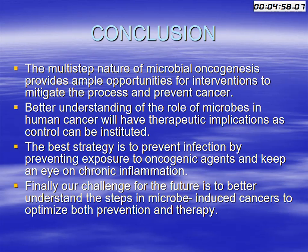In conclusion, the multistep nature of microbial oncogenesis provides ample opportunities for interventions to mitigate the process and prevent cancer. Better understanding of the role of microbes in human cancer will have therapeutic implications as control can be instituted. The best strategy is to prevent infection by preventing exposure to oncogenic agents and keeping an eye on chronic inflammation. Our challenge for the future is to better understand these steps in microbe-induced cancers to optimize post-prevention therapy.